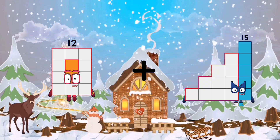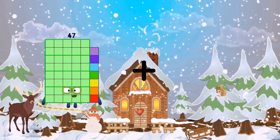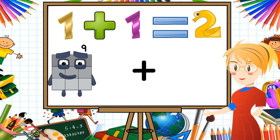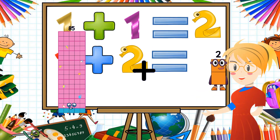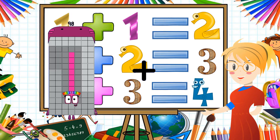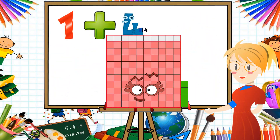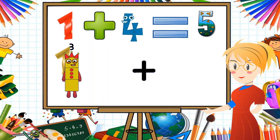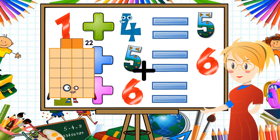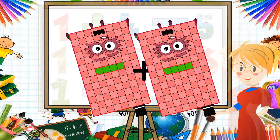12 plus 20 equals 32. 60 plus 25 equals 85. 85 plus 92 equals 177. 25 plus 89 equals 114. 44 plus 26 equals 70. 104 plus 104 equals 208.